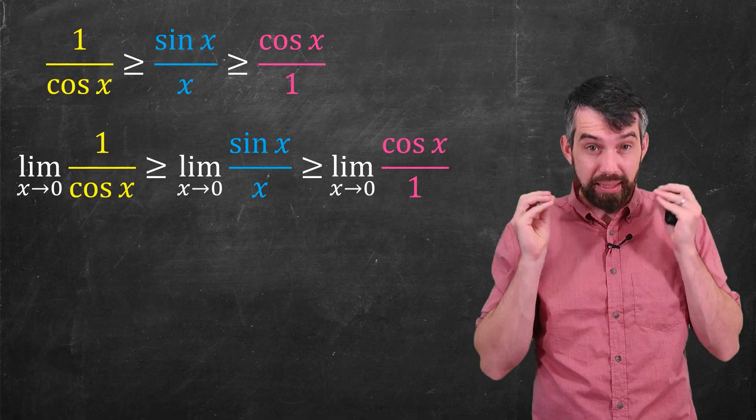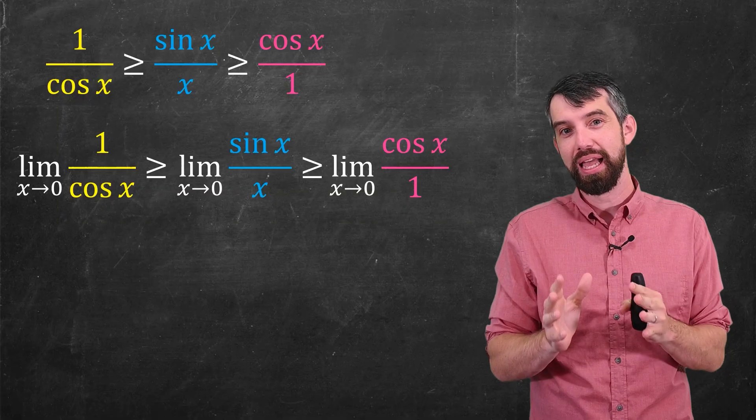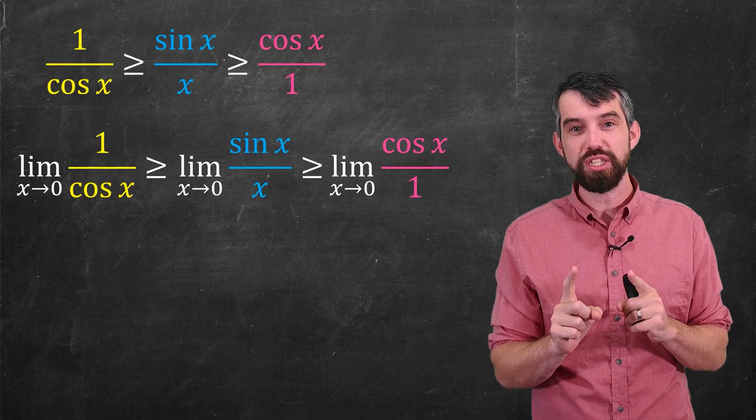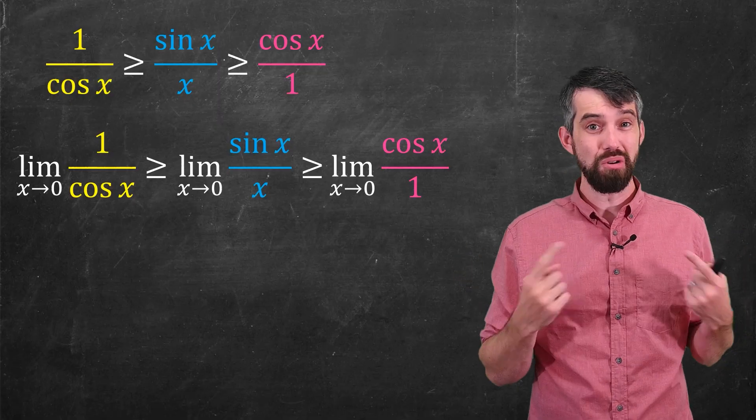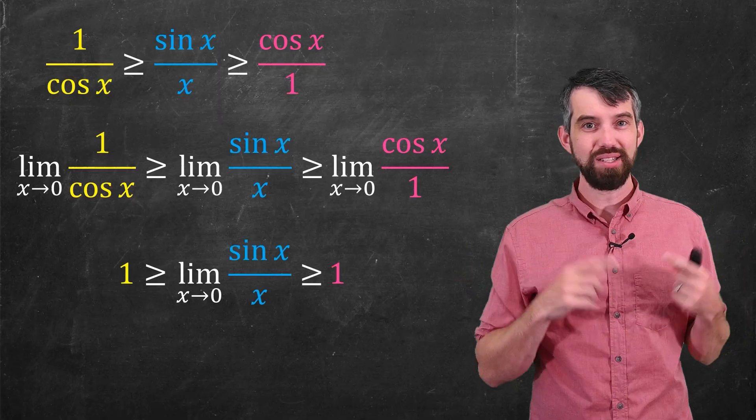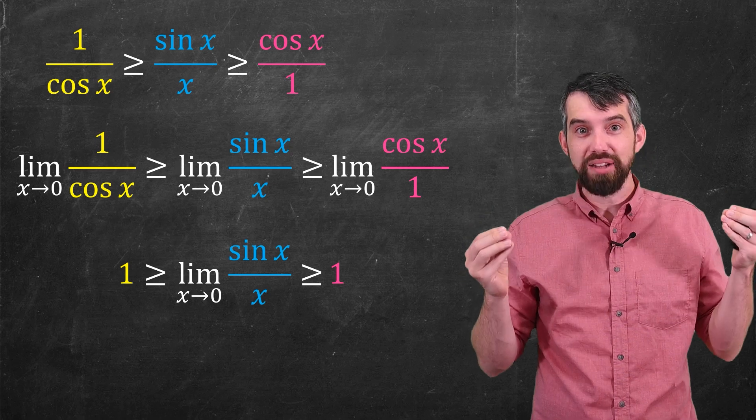And if I do that, then the thing I'm interested in, sine x over x, and the limit of that as x goes to 0, the thing in the middle, the thing in blue, is now sandwiched between two different limits that I know the answer to. Cosine of 0 is just 1, and so both of these limits on both sides are just equal to 1.